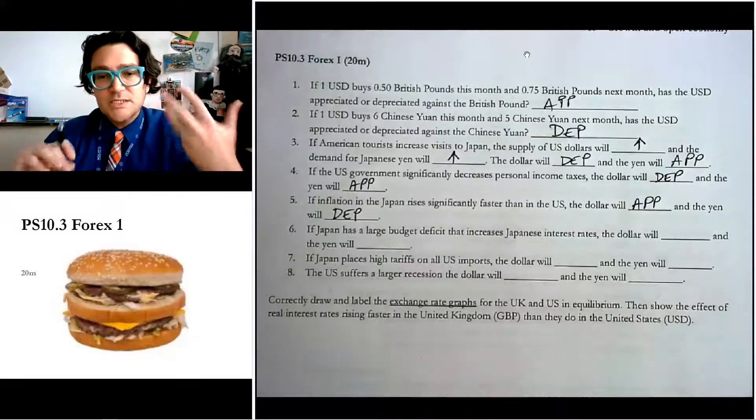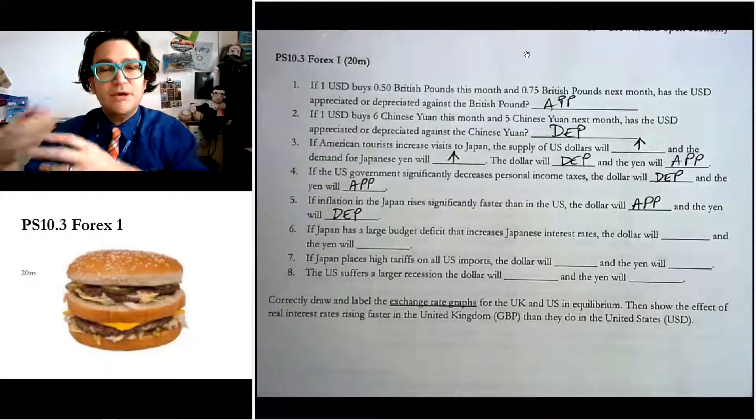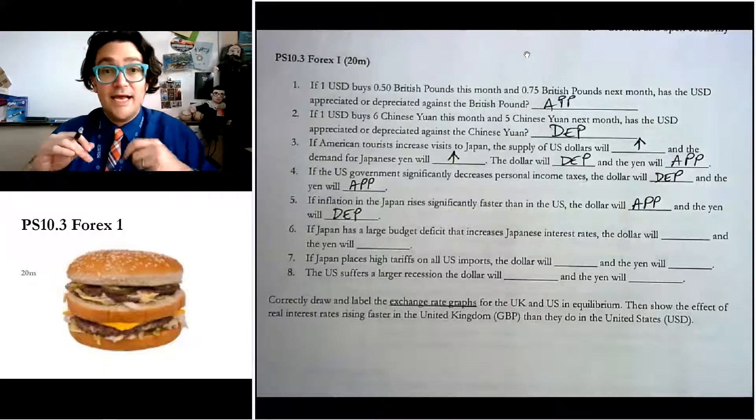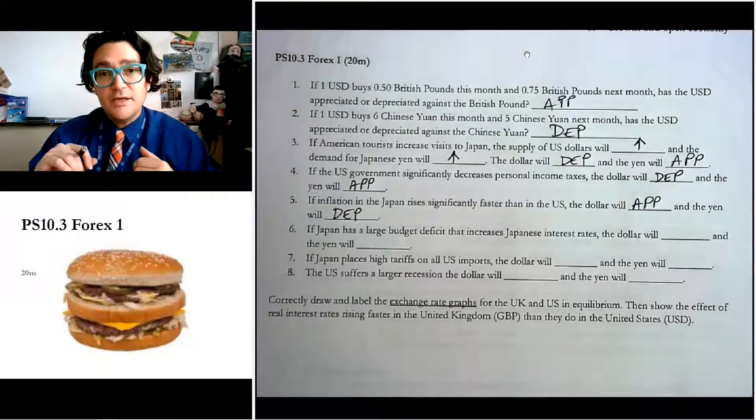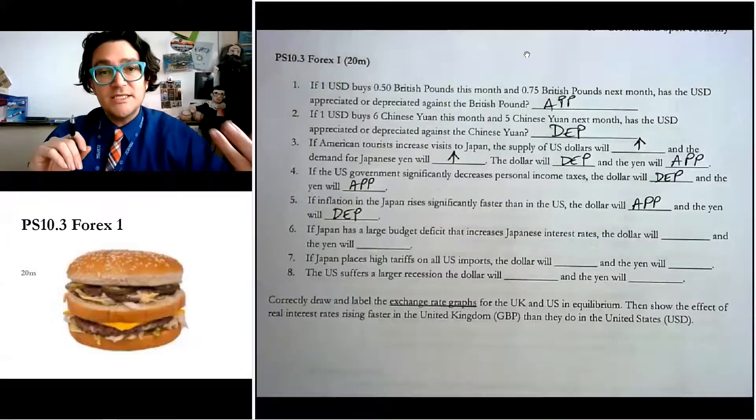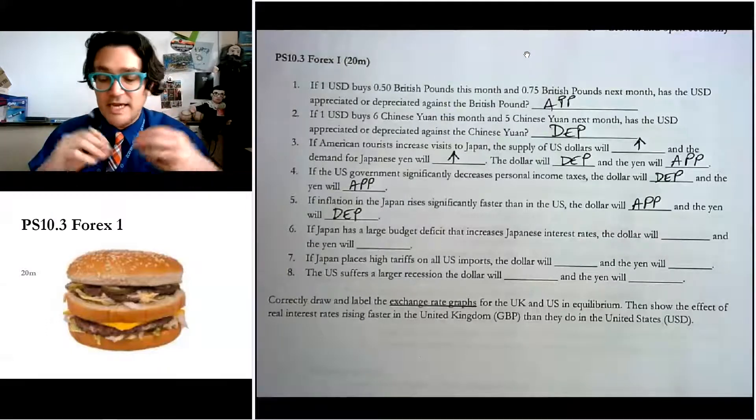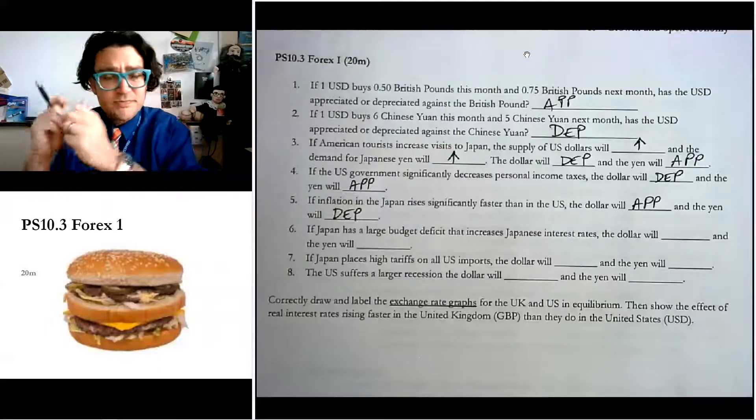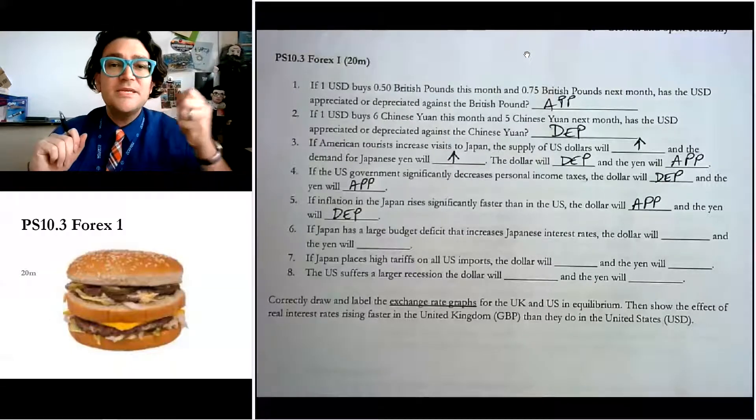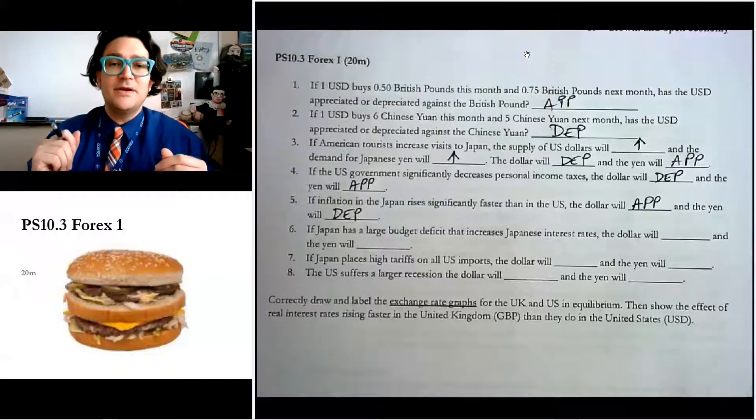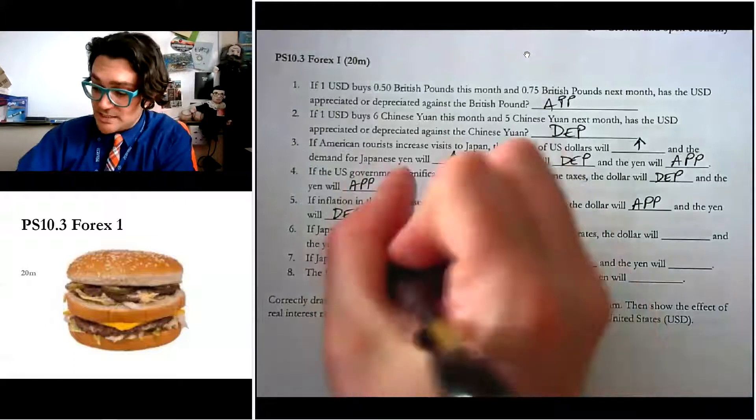If Japan has a large budget deficit that increases Japanese interest rates, the dollar will blank, the yen will blank. So in this one, well, if Japanese interest rates are really high, the Americans are going to look at that and go, oh man, I want to put my money, my loanable funds into their market. And so they're going to end up wanting to buy Japanese bonds and they're going to want to buy Japanese stocks, bonds, and real estate financial assets. And so the Americans are going to want more of those Japanese things. So they need more yen in order to buy them. So the demand for yen goes up. And that means the yen appreciates.